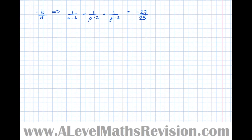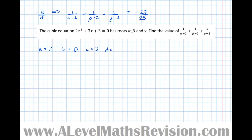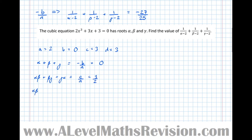Now that's not the only way this question could have been done — let's do it without substitution. First of all, write down the values: a = 2, b = 0 (there's no coefficient of x²), c = 3, and d = 3. So the sum of the singles, alpha + beta + gamma = -b/a = 0. The sum of all the doubles, alpha·beta + beta·gamma + gamma·alpha = c/a = 3/2. And the sum of the triplets, alpha·beta·gamma = -d/a = -3/2.